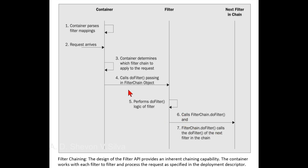Steps from step four are repeated until the last filter in the filter chain has completed its work. The filterChain.doFilter call on the last filter calls the last filter in the chain. Note that the mechanism of chaining is inherently different from most other conventional filtering and server extension mechanisms, such as Apache modules and Microsoft Internet Information Server and the Internet Server API.